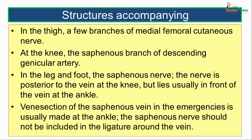The structures accompanying the great saphenous vein: in the thigh, a few branches of the medial femoral cutaneous nerve accompany the vein. At the knee joint, the saphenous branch of the descending genicular artery accompanies the vein. In the leg and the foot, the saphenous nerve accompanies the great saphenous vein. The nerve is posterior to the great saphenous vein at the knee but lies usually in front of the vein at the ankle. Venisection of the saphenous vein in emergencies is usually done at the ankle, and the saphenous nerve should not be included in the ligature around the vein.